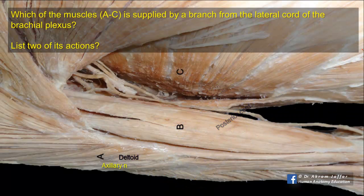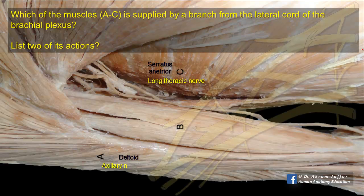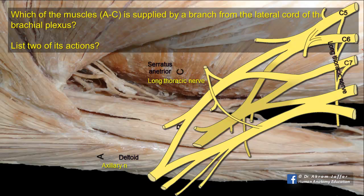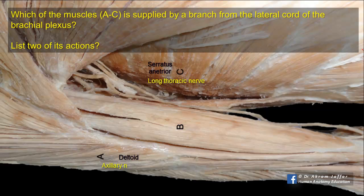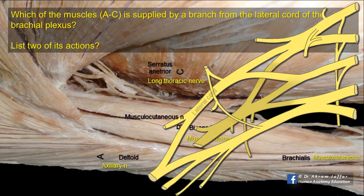C is the muscle with eight digitations that wraps around the thoracic wall — it is the serratus anterior muscle, supplied by the long thoracic nerve, a branch of the roots C5, C6, and C7 of the brachial plexus, so it is not derived from the lateral cord. B is the most superficial muscle in the flexor compartment of the arm, lying in front of brachialis — it is the muscle with two heads, the biceps brachii muscle. Like all other muscles in the flexor compartment of the arm, it is supplied by the musculocutaneous nerve, which is derived from the lateral cord of the brachial plexus and is one of the two terminal branches of this cord.